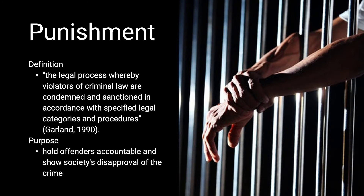The next term is punishment, which is the legal process whereby violators of criminal law are condemned and sanctioned in accordance with specified legal categories and procedures. Punishments are put into place to hold offenders accountable and to show society's disapproval of the crime. Today's justice system still seeks to provide justice to victims that have been hurt and penalize offenders to the necessary extent of their crime.